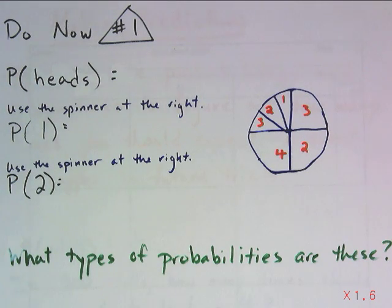Now it's your turn. Try these do-now problems. For this first problem, I want you to tell me the probability of landing on heads when you flip a coin one time. For the next two, I want you to use the spinner at the right and figure out the probability of first landing on a one, and then probability of landing on a two. Then at the end, tell me what types of probabilities these are. Pause now.